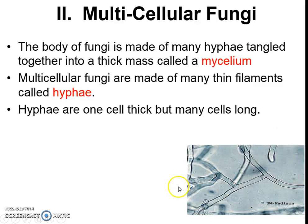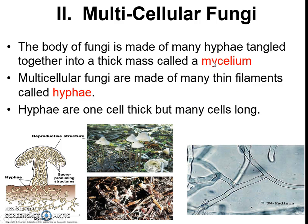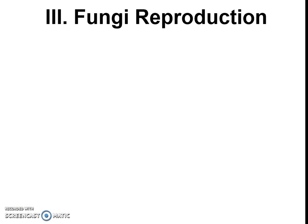Hyphae are only one cell thick. When we tangle them up, we call it a mycelium. We have this structure tangled up to make a reproductive structure — that's mycelium — and at the bottom the hyphae are spread out. All together we call it mycelium. We're used to seeing mushroom caps, but not all fungi look quite like mushrooms.